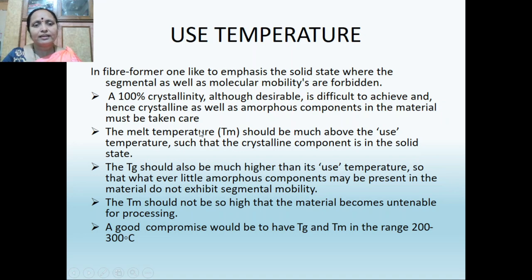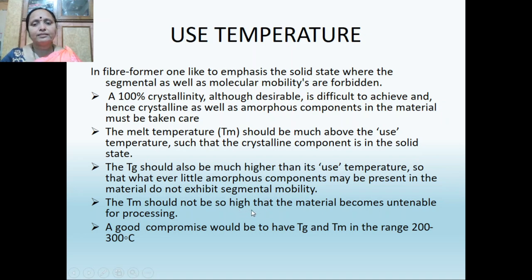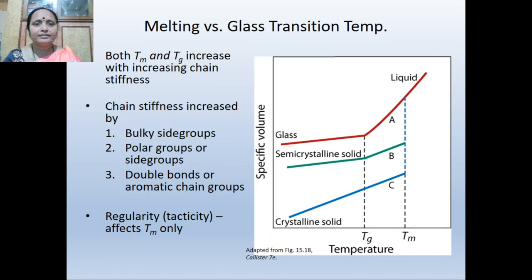The melt temperature should be above the used temperature so that the crystalline component is maintained in the solid state. The glass transition temperature should be much higher than the used temperature so that whatever little amorphous component is present does not exhibit segmental mobility. The melt temperature should not be so high as to make the material unprocessable; a good compromise is to have glass transition and melt temperature in the range of 200 to 300 degrees Celsius.